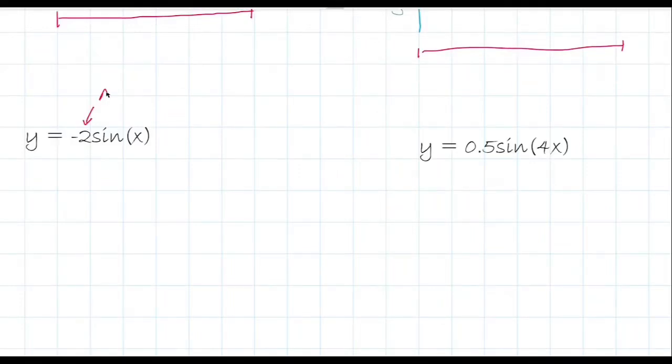y equals negative 2 sine x. Our amplitude is 2 and our b value is 1. So that means our period is going to be 2π divided by b, which is 2π divided by 1, which is just 2π.